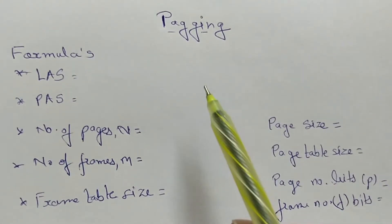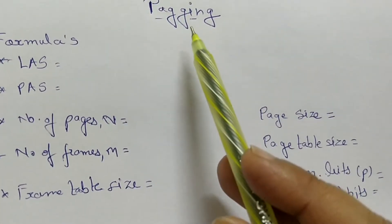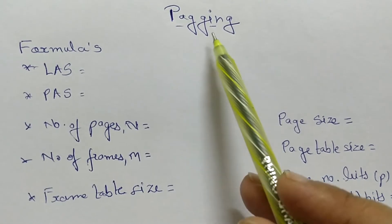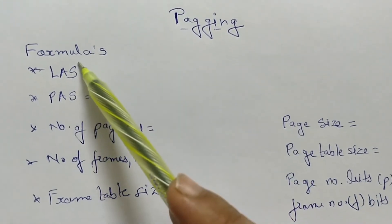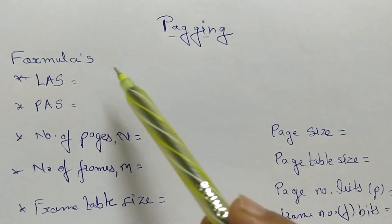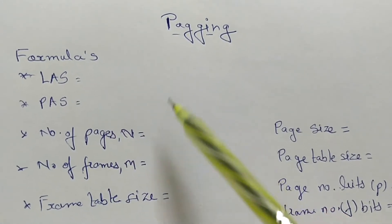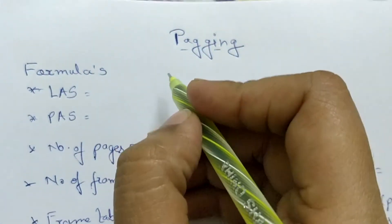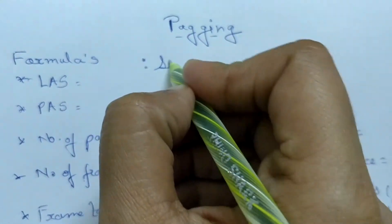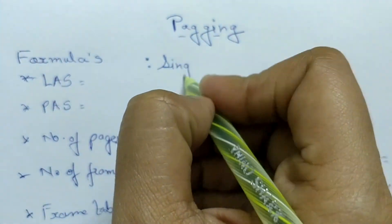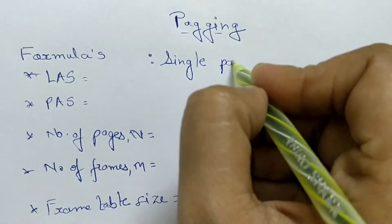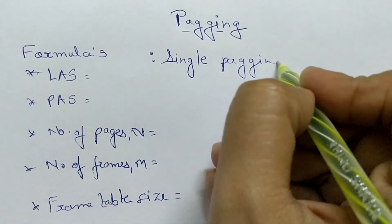The topic we are going to see today is paging. We are going to see numericals based on paging. First, we will see what are the different formulas that we are going to use in a paging system. We are basically concentrating on single paging. There are different levels of paging: single level, two level, and multi level. We are concentrating on single paging.